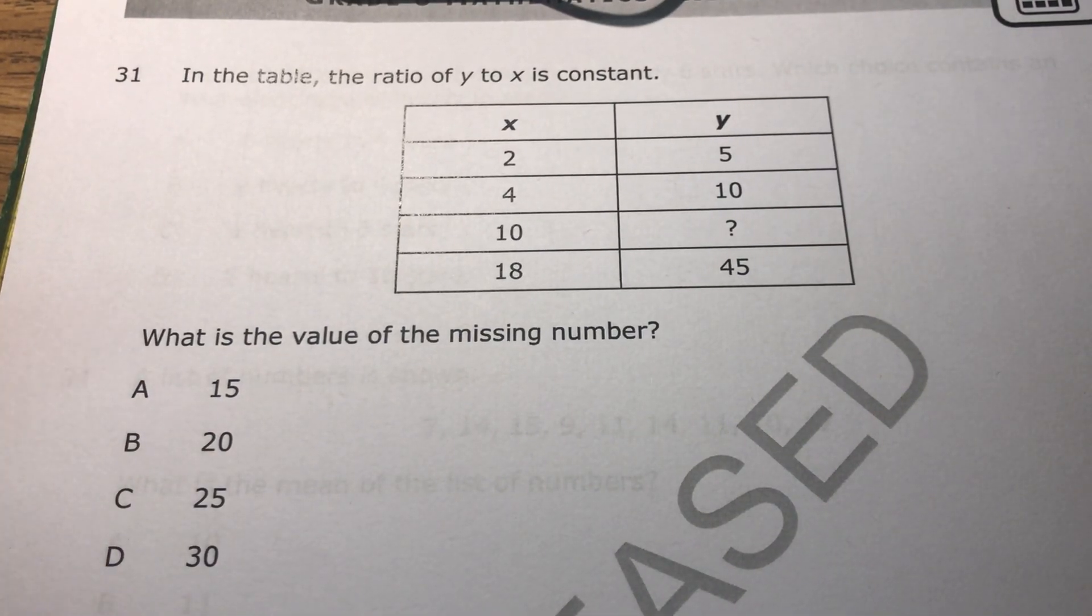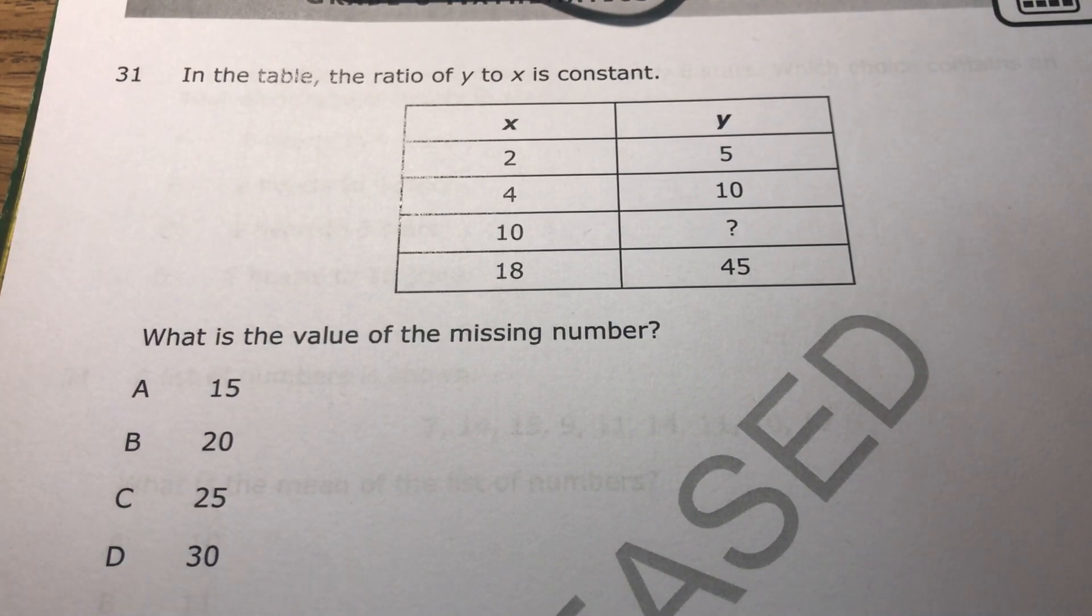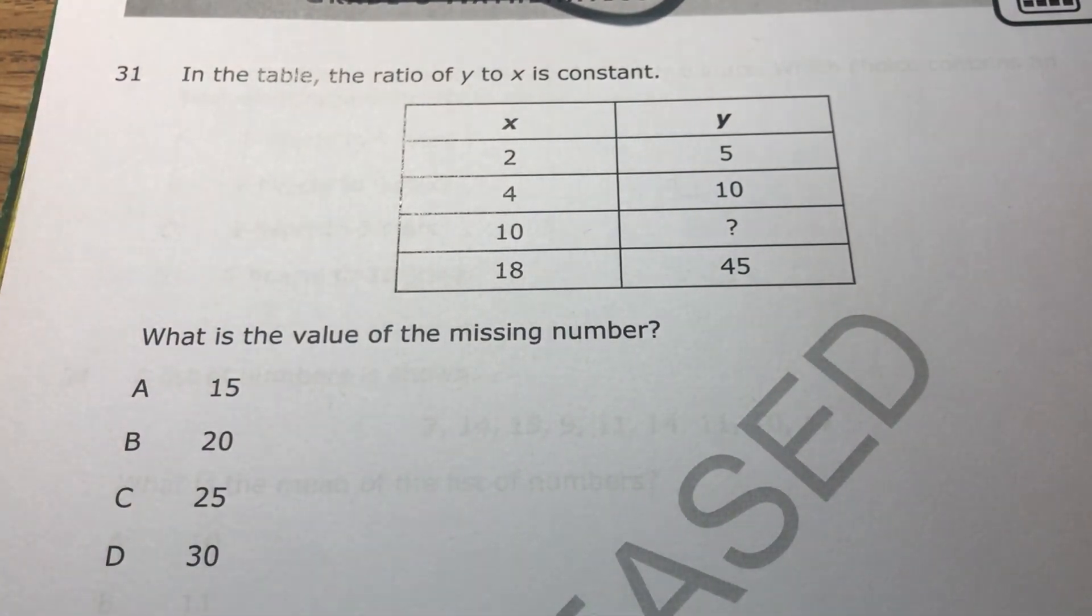Hey, today we're going to look at number 31 from the EOG for sixth grade in North Carolina. This one is about relationships between two numbers. We call that relationship a ratio.